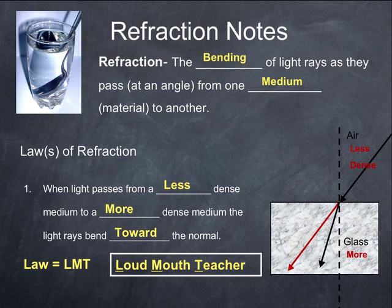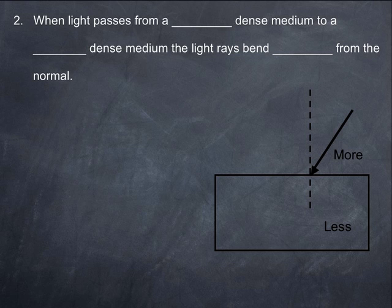You can probably guess what law number two says. When light passes from a more dense medium to a less dense medium, that makes the light rays bend away from the normal. That's it exactly. If we have light moving from a more dense substance into a less dense substance, rather than continuing on, it's going to bend away from the normal.